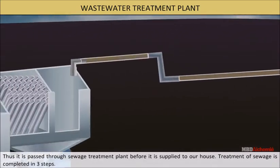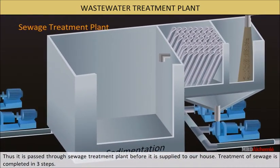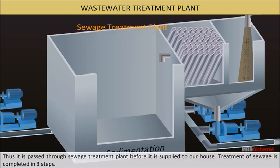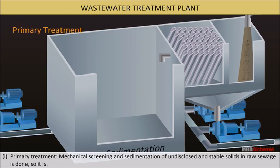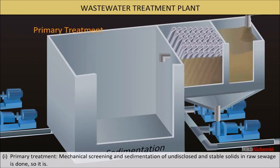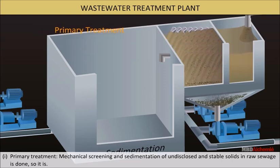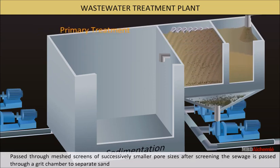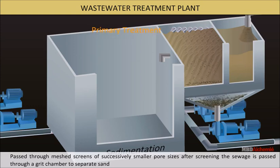Sewage is passed to sewage treatment plants before it is supplied to our homes. Treatment of sewage is completed in three steps. Primary treatment: mechanical screening and sedimentation of undissolved and stable solids in raw sewage is done. It is passed through mesh screens of successively smaller pore sizes.